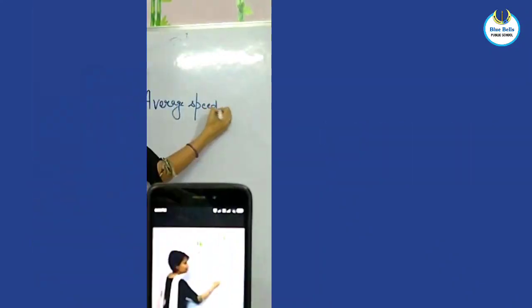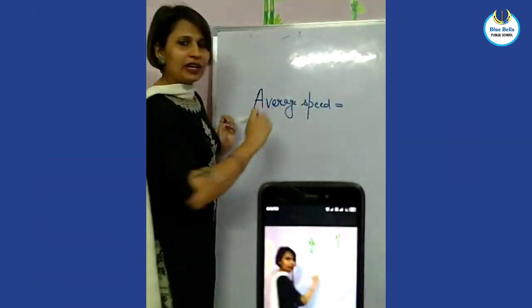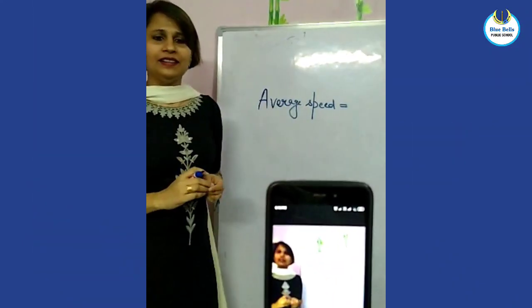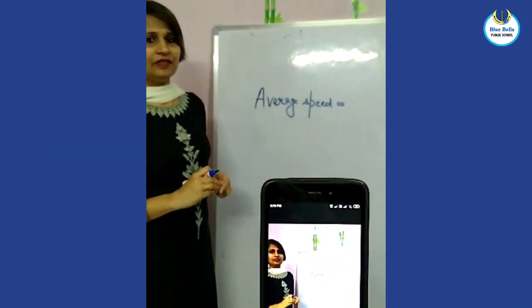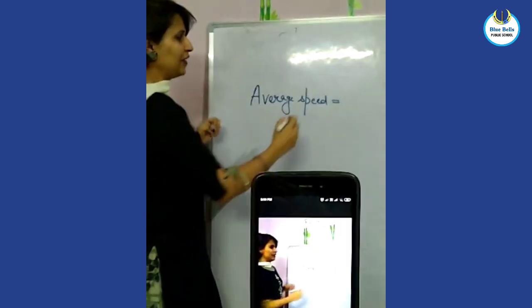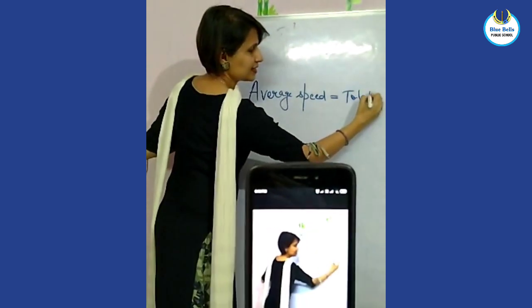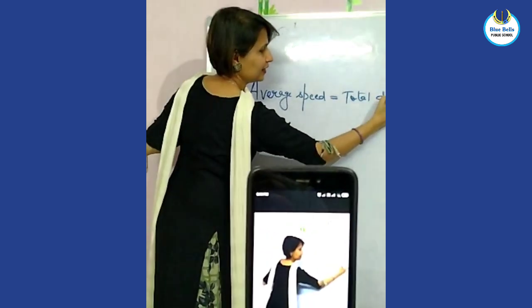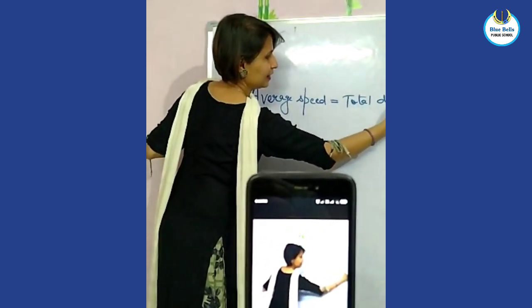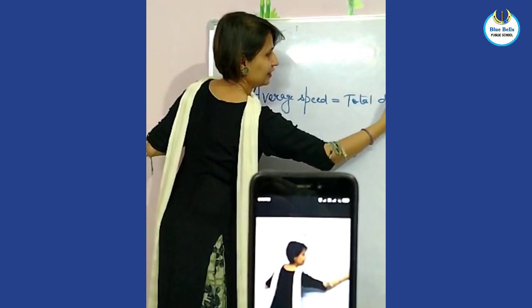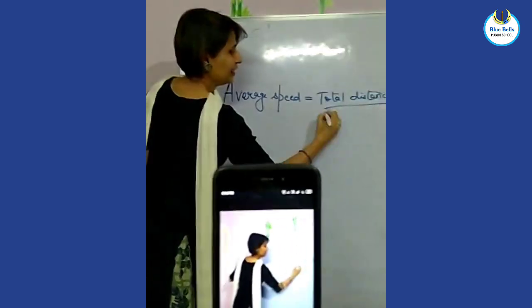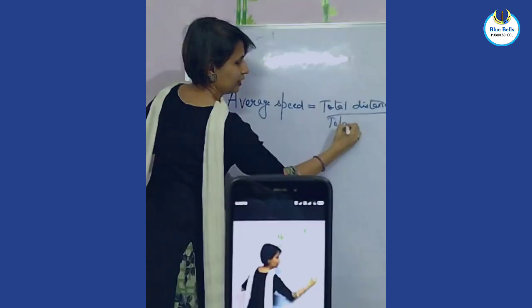Can you tell me what is average speed? It is defined as total distance upon total time. Very good — average speed is total distance upon total time.